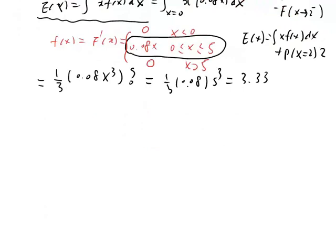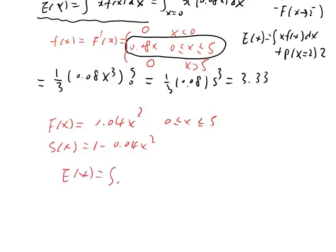We know f(x) equals 0.04 x squared. Your x is basically from 0 to 5. Your survival function is 1 minus 0.04 x squared. So we're going to do an integral. E(x) is from x from 0 to 5, survival function 1 minus 0.04 x squared, dx to the first power, which is the same as dx.